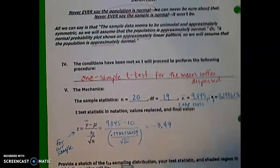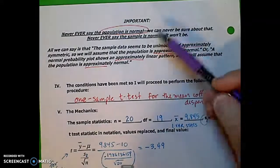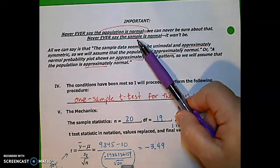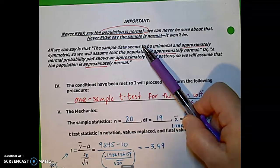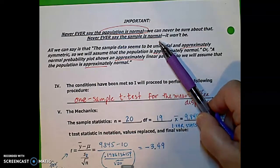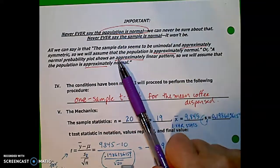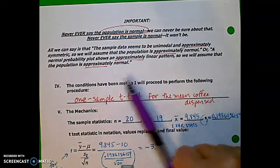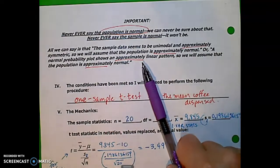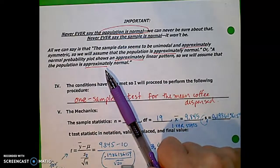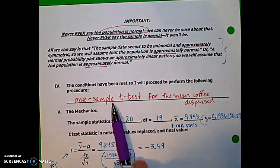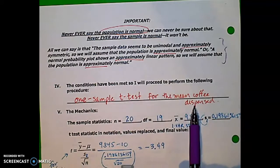Alright. So, the next page, just some notes for you. Remember, do not say that the population is normal. We don't really know for sure about that. And never say that the sample is normal. The sample, unless it's made up data, the sample will not be normal for sure. So, here are some things that you can say. The sample data seems to be unimodal and approximately symmetric. So, we'll assume the population is approximately normal. That's a good one. Or, a normal probability plot shows an approximately linear pattern. So, we'll assume that the population is approximately normal. Lots of weasel words in there. But, they're necessary to use. So, given these statements, we will say the conditions have been met. So, we'll proceed to perform a one sample t-test for the mean coffee dispensed.